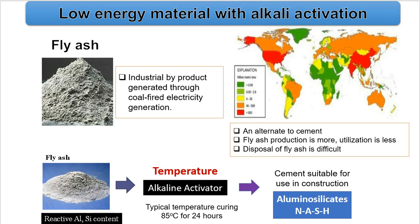Fly ash is one of the low energy materials because it is an industrial byproduct from coal-fired electricity generation and can be used as an alternate to cement. Its production in India is very high whereas its utilization is comparatively less and its disposal is difficult. Fly ash mixed with an alkaline activator and cured at elevated temperature gives a product with binding properties, and hence can be used as a replacement to cement in the construction industry.